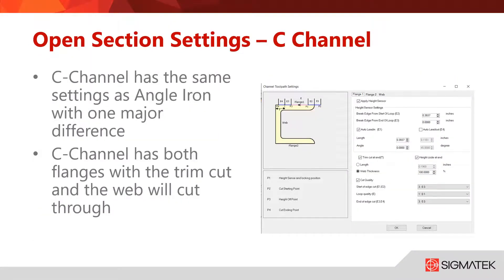C channel will follow most of the same settings. The main difference here is that the C channel consists of two flanges and a webbing. The flange settings will mimic much of the angle iron settings — the cut order from P1 to P4 and the trim settings. Much of the other profiles will follow this same pattern of flange and web settings. To know the order of cuts, we will cut in order of the tabs from left to right: start with flange 1, cut flange 2, and finish with the web cut that will allow the part to be cut free. You will want to make sure that you are setting enough distance with your trim cut to allow for the cleanest finish possible.